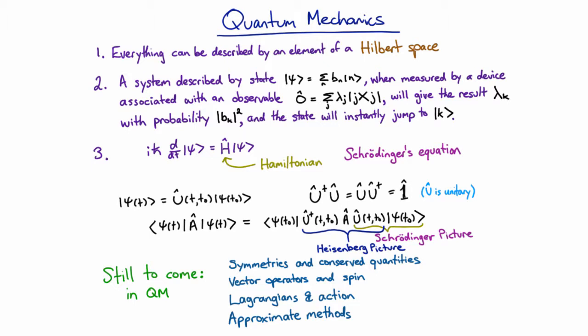After we talk about that, we're going to talk about vector operators and spin. Spin is one of the more counterintuitive things in quantum mechanics. It's a good system to examine while discussing the ideas behind the transformations involved in discussing symmetries.